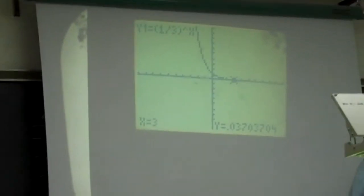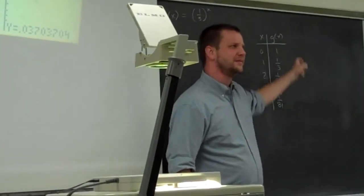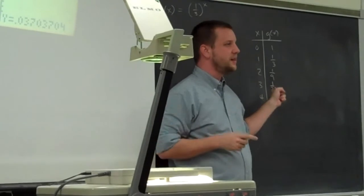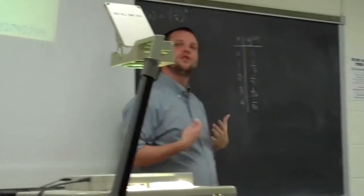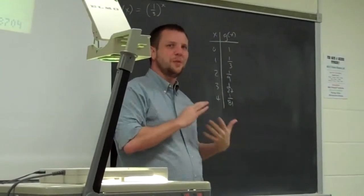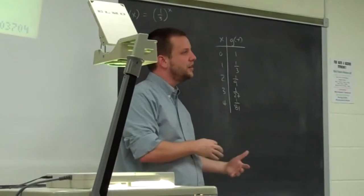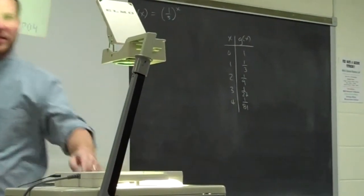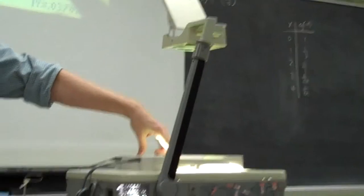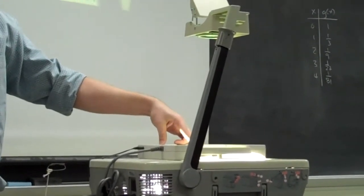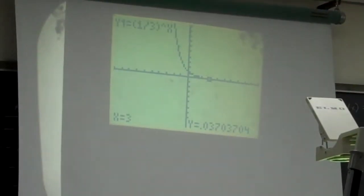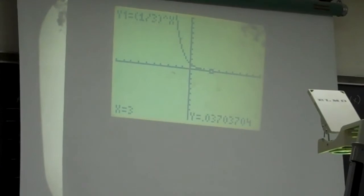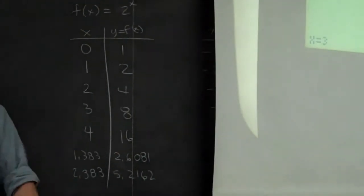And so on. Why? Same reason as for 2 to the x, right? Every time my exponent goes up by one, I'm adding on one more factor of one-third. When I multiply by one-third, doesn't that make it a smaller number? A third of this, and a third of this, and a third of this. So this is a decreasing function — because as my exponent gets larger, I'm multiplying by one-third over and over again, getting smaller and smaller numbers, instead of what happened with 2 to the power.